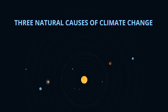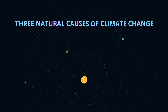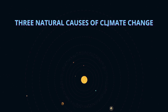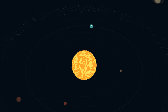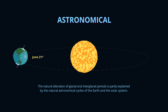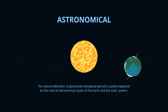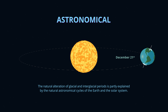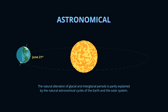Three natural causes of climate change. Astronomical: the natural alteration of glacial and interglacial periods is partly explained by the natural astronomical cycles of the Earth and the solar system.